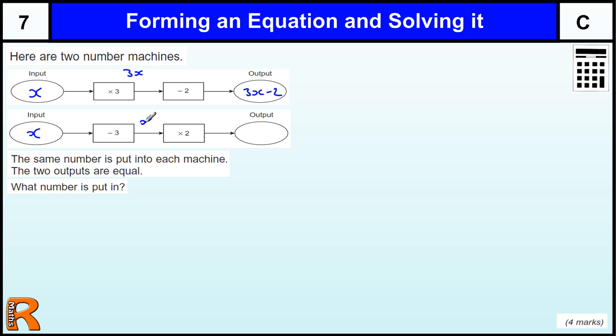This one I'm taking away 3, so I've got x minus 3, and then I'm times in that by 2, so I've got 2 lots of x minus 3.